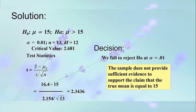H₀: mu = 15; Hₐ: mu > 15, testing at alpha = 0.01, n = 13, df = 12, critical value = 2.681. Using the t-test statistic: computed t = (16.4 − 15) / (2.154 / sqrt(13)) = 2.3436. The decision is not to reject H₀ at alpha = 0.01 because the computed value of t (2.3436) is less than the critical value of 2.681, so 2.3436 falls in the acceptance region.